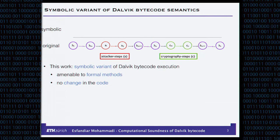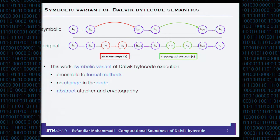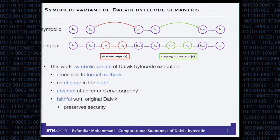We want to basically do two things. We want to abstract the attacker in a symbolic way, and we want to abstract the cryptography. We cut out all steps that belong to crypto and replace them with something else. Everything else should remain the same. Whenever there is no crypto involved, the program should do exactly the same thing in our symbolic variant of the execution as in the normal execution. In particular, we want our abstraction to be faithful in the sense that it preserves security.